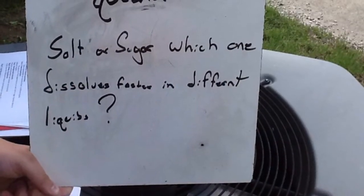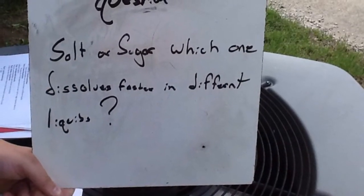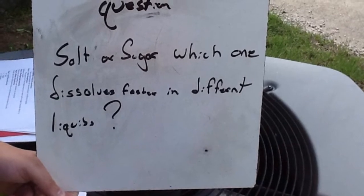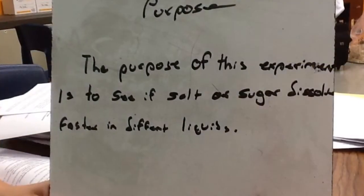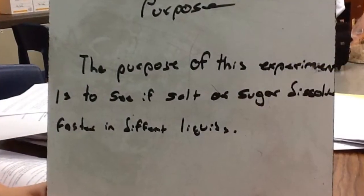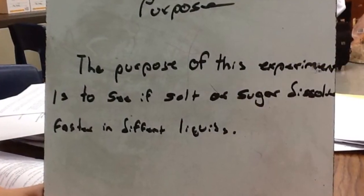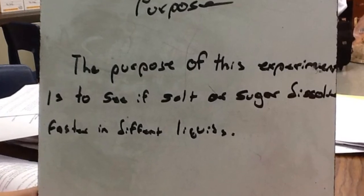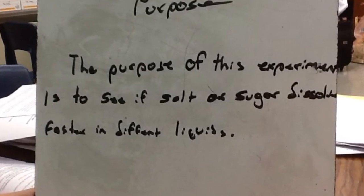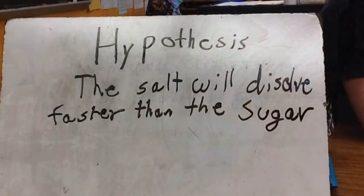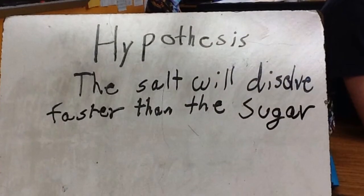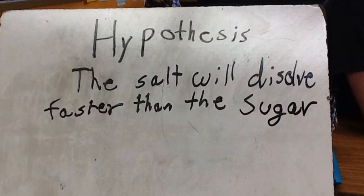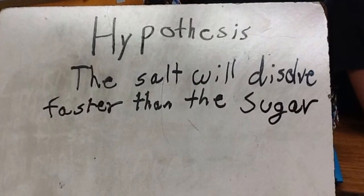So our question is: salt or sugar, which one dissolves faster in different liquids? Our purpose of this experiment is to see if salt or sugar dissolves faster in different liquids. Our hypothesis is the salt will dissolve faster than the sugar in all of the liquids.